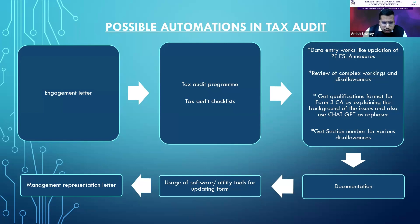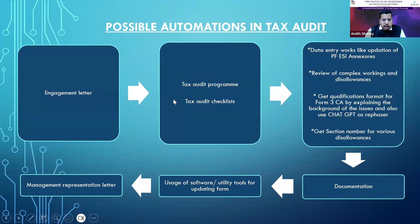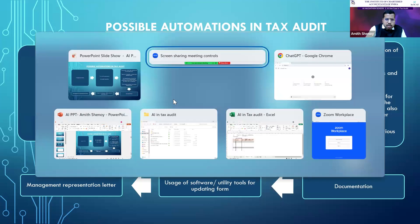I will now give a live demonstration of how CA ChartGPT can be used to generate three to four things in one go: the engagement letter, the tax audit program, the tax audit checklist, and the MRL — all including the name of the assessee, the signing partner name, and every detail.